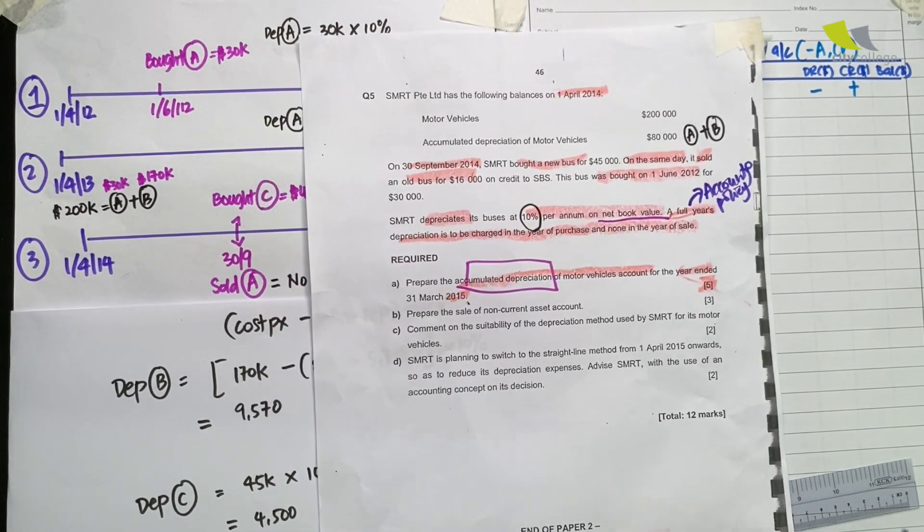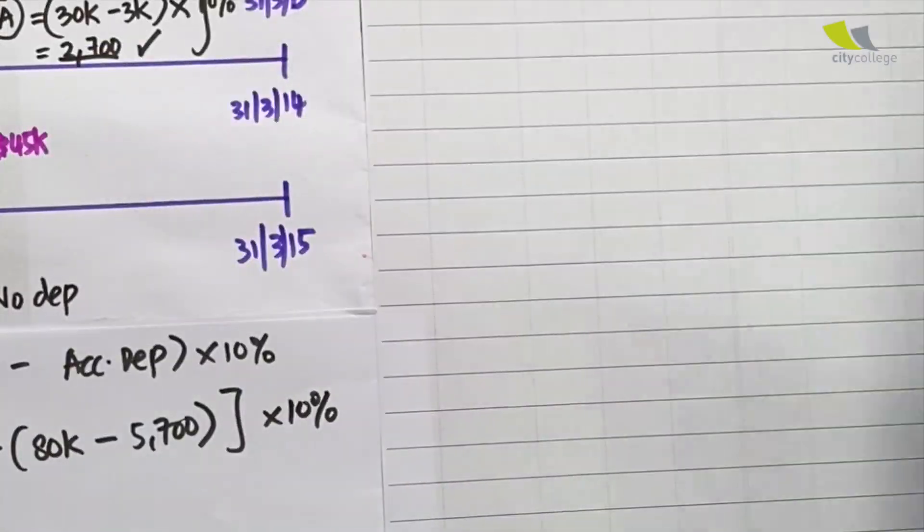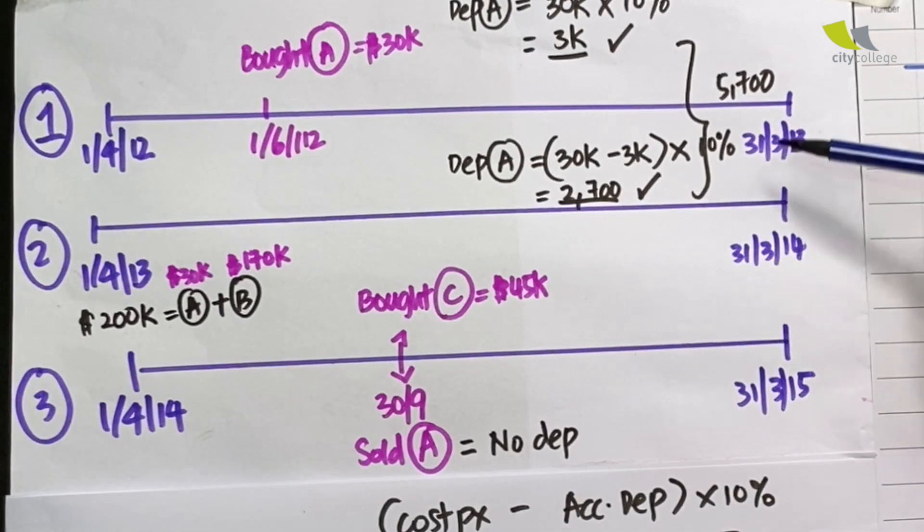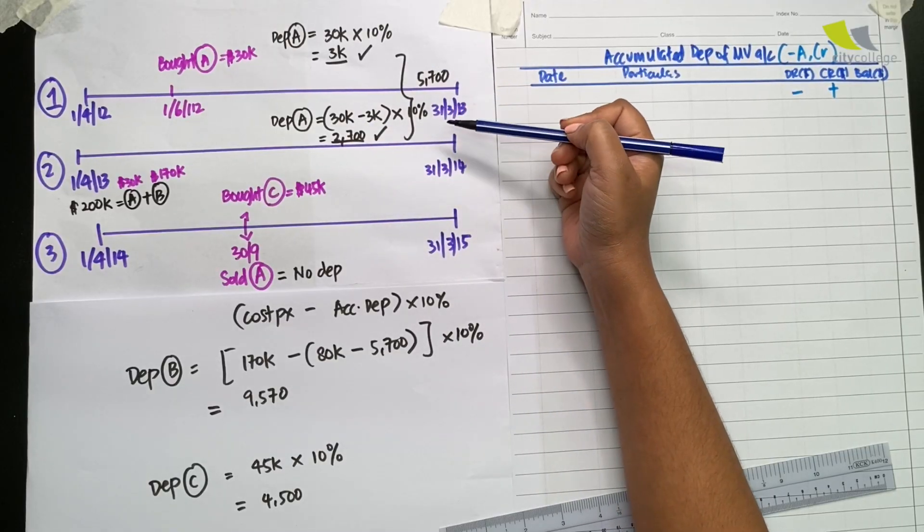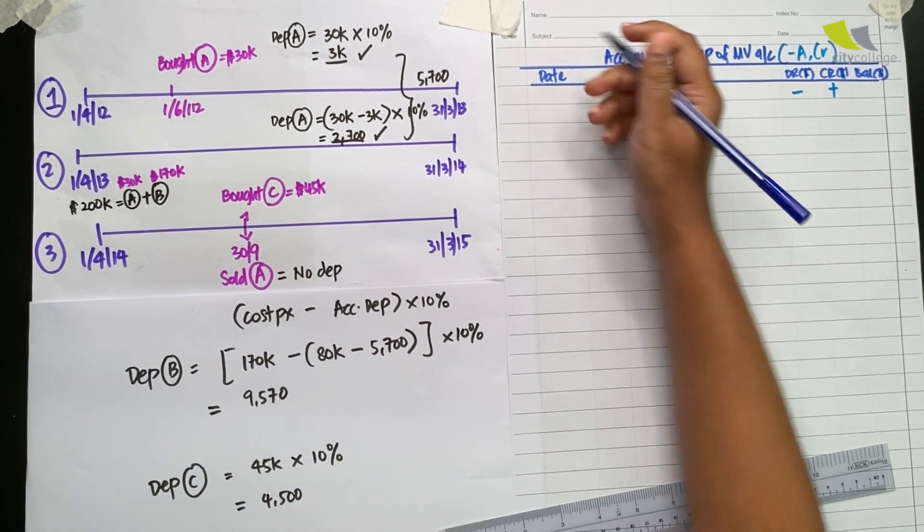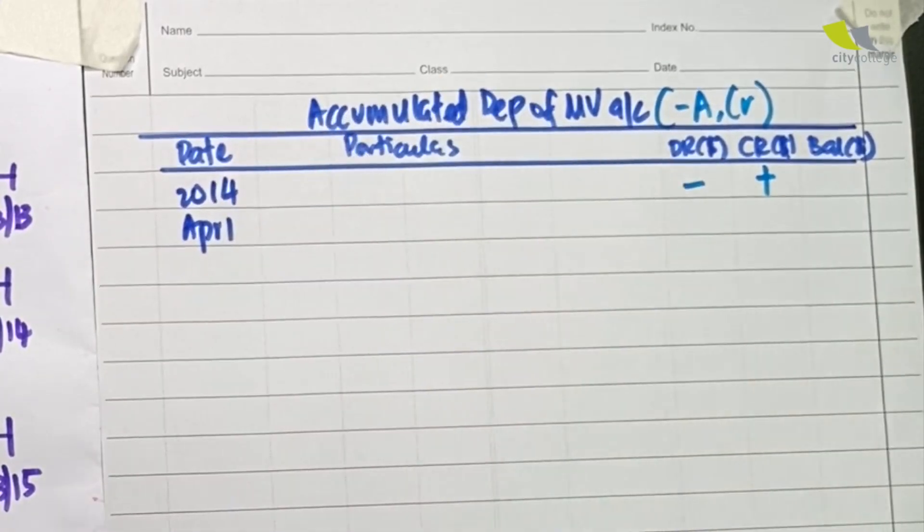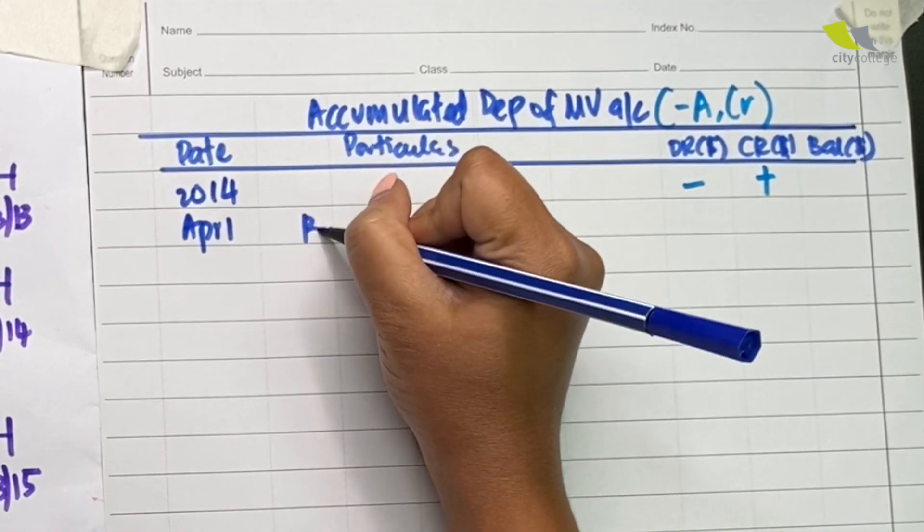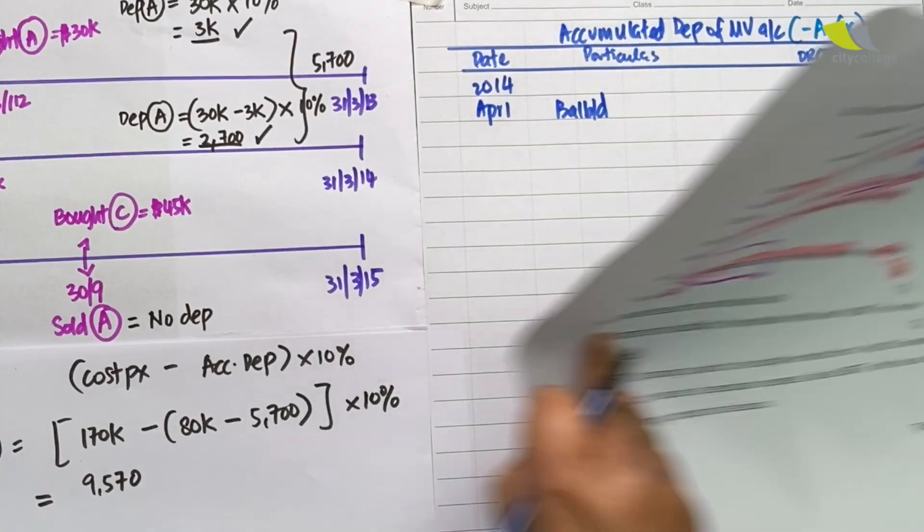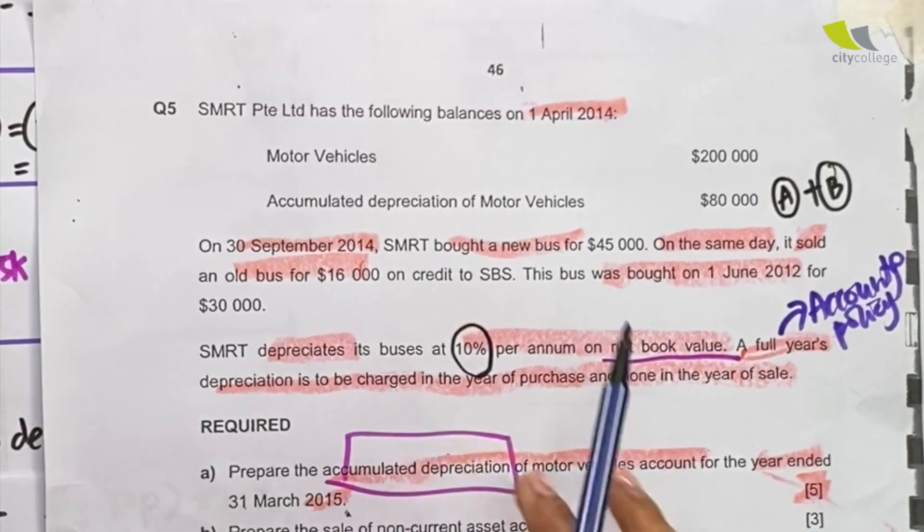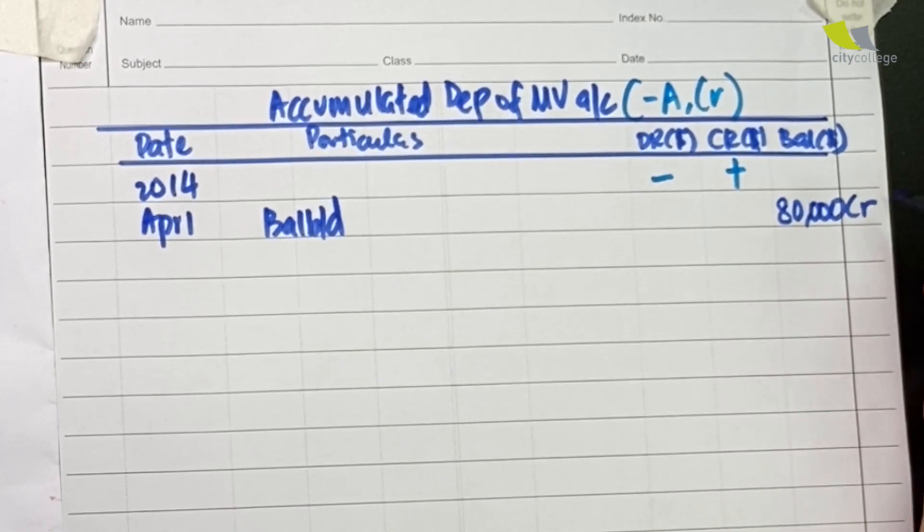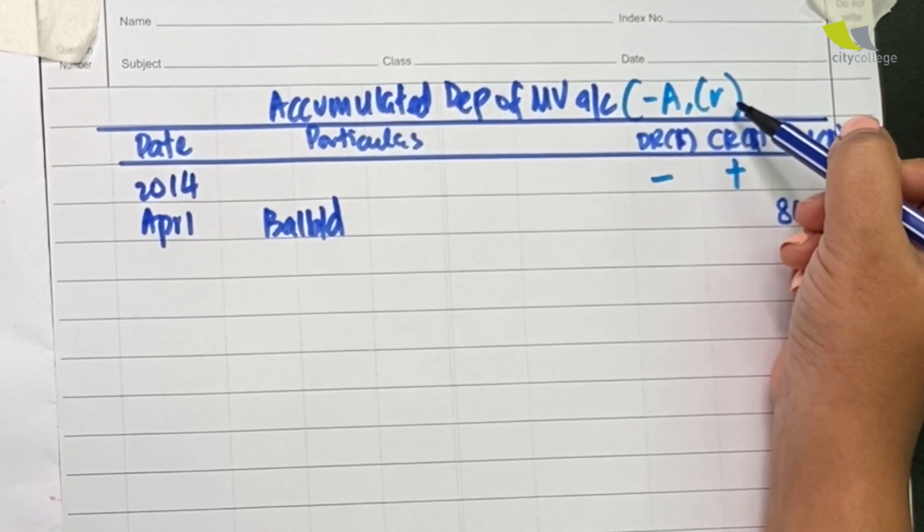The question says to prepare the account only for the year ended 31st March 15. That refers to the final year, year number three. You are not required to prepare the account for the earlier years, but the calculation from the first two years will be reflected in the beginning balance of year three. The beginning date of the third year is 2014, April 1st. We'll begin with a balance brought down. The question says there is an accumulated balance of 80,000. We place it in the balance column. Remember to attach a sign and the sign is credit because the opening balance always follows the nature of the account.